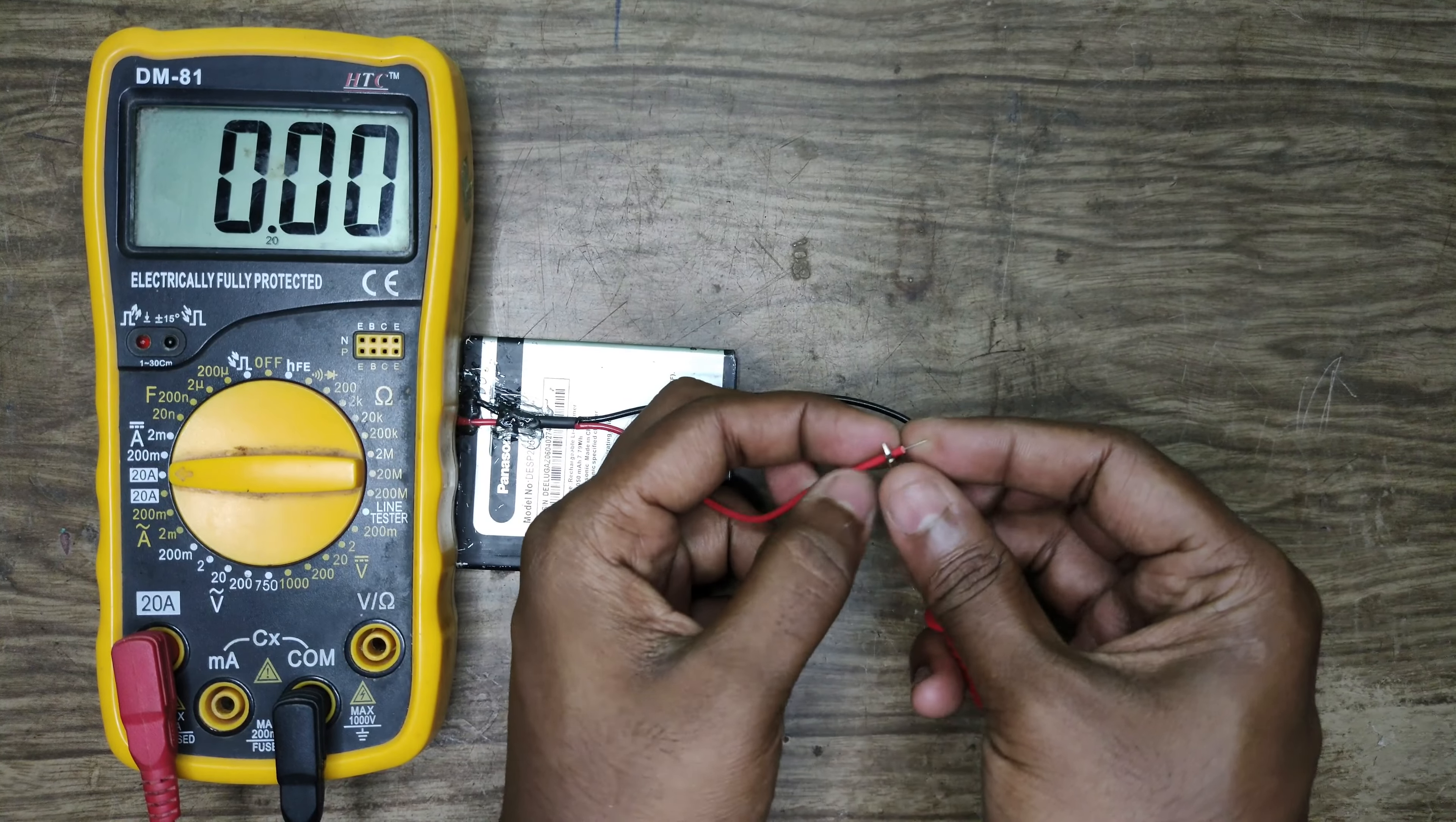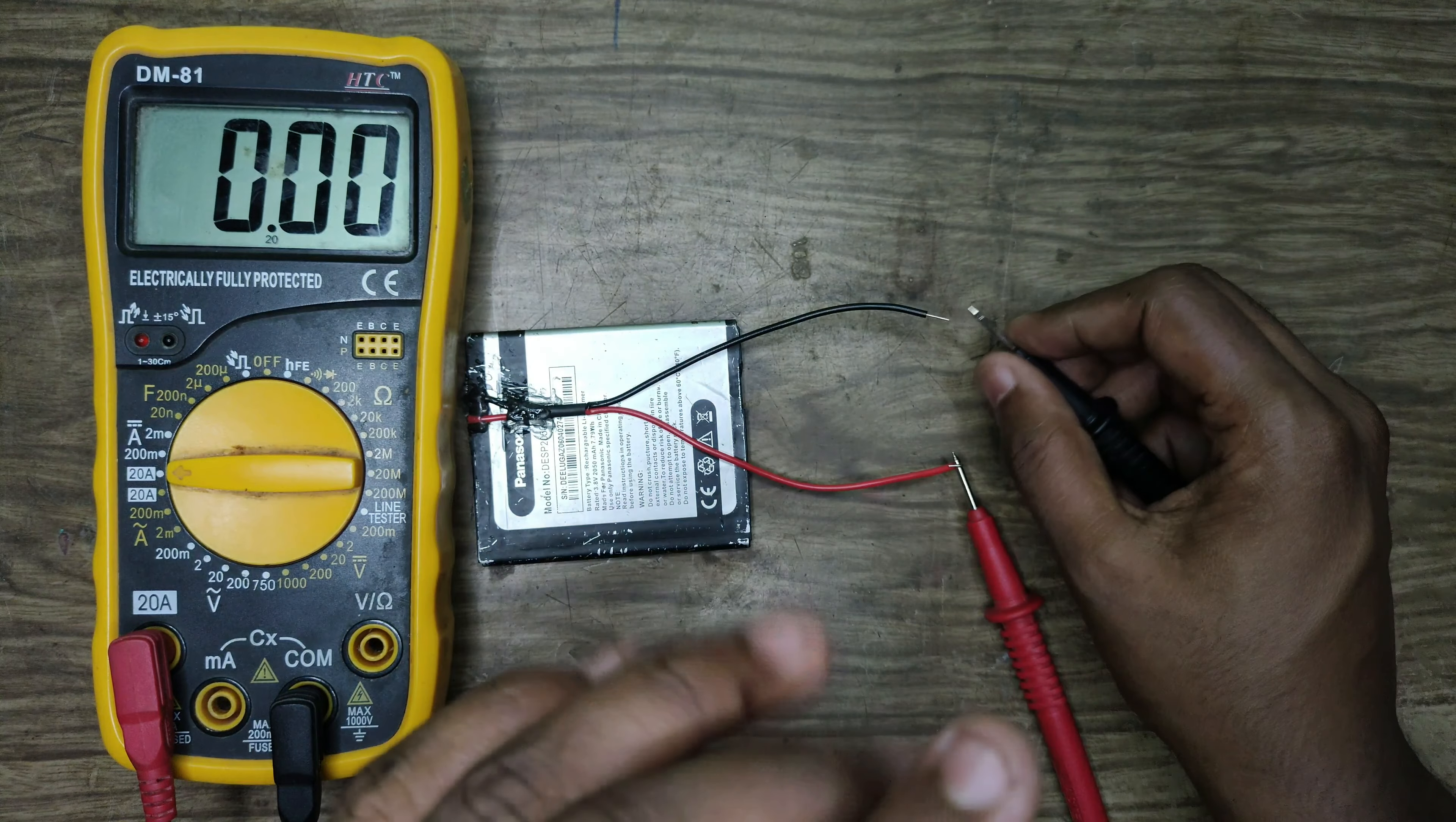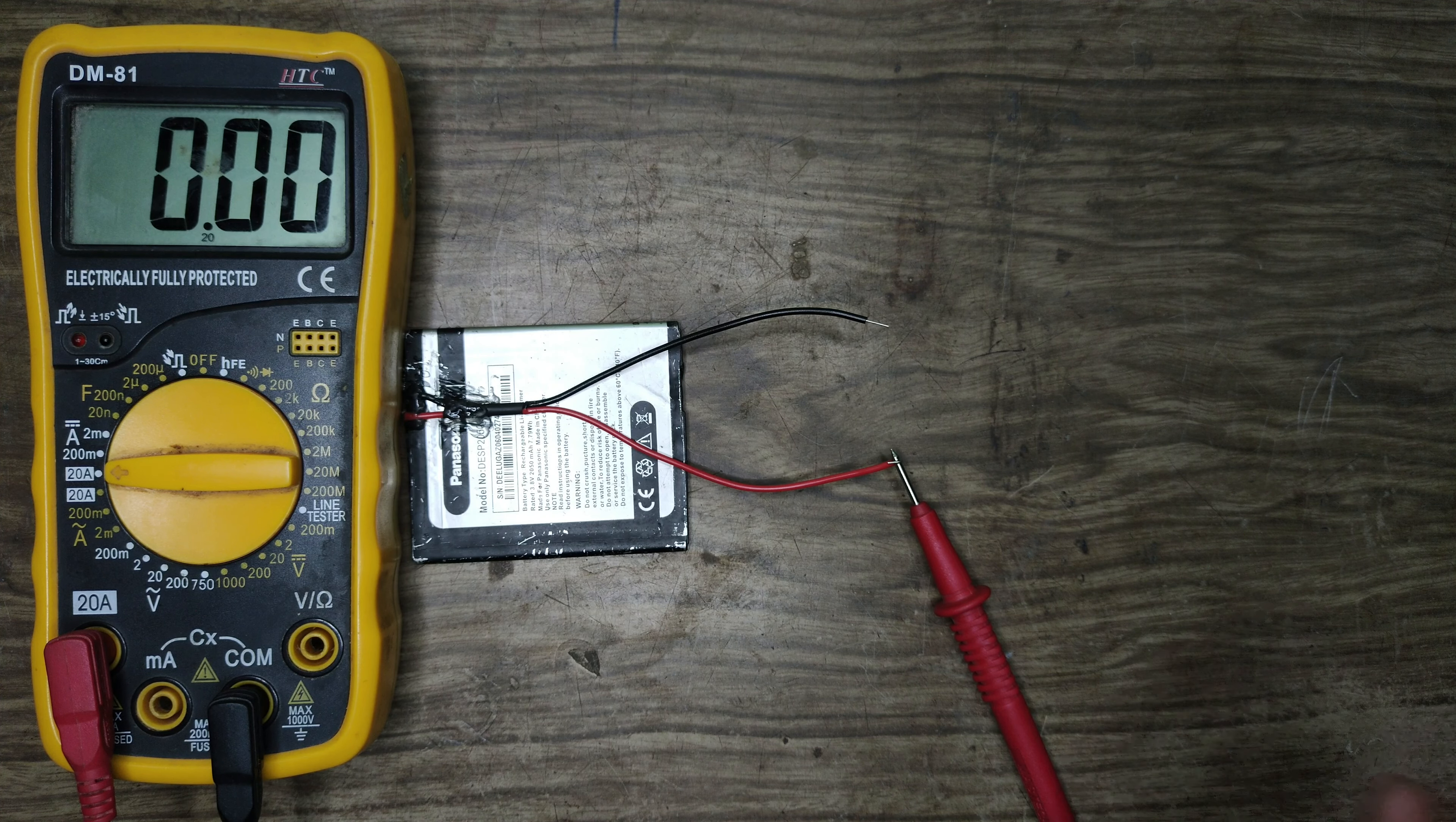There is the red probe. I connected it to the positive terminal of the voltage source. I connected the black terminal to the second piece. Now you can see the alligator clips.